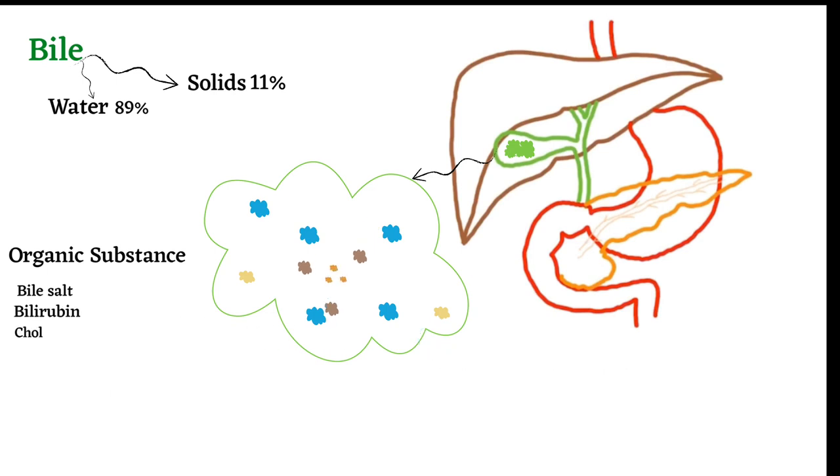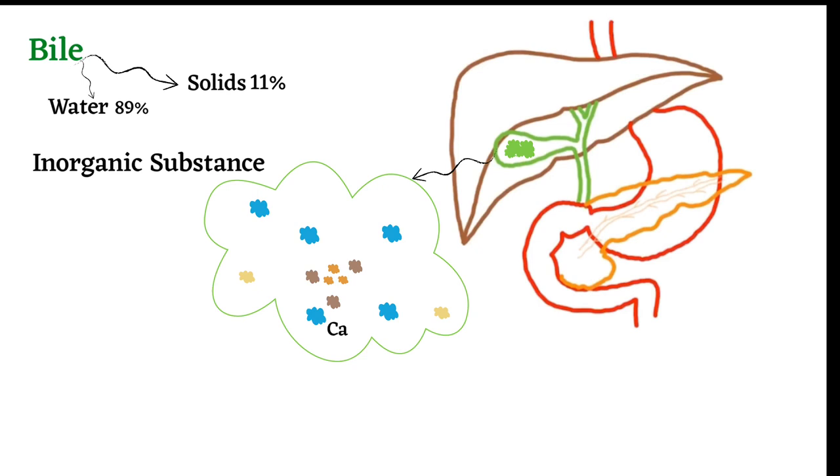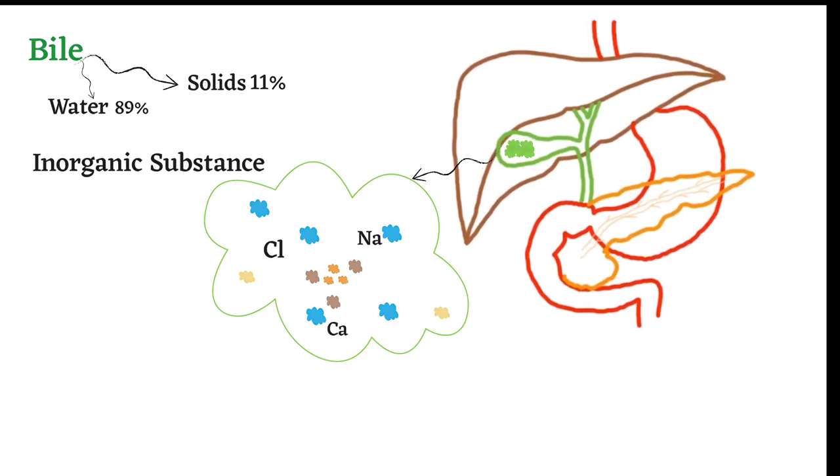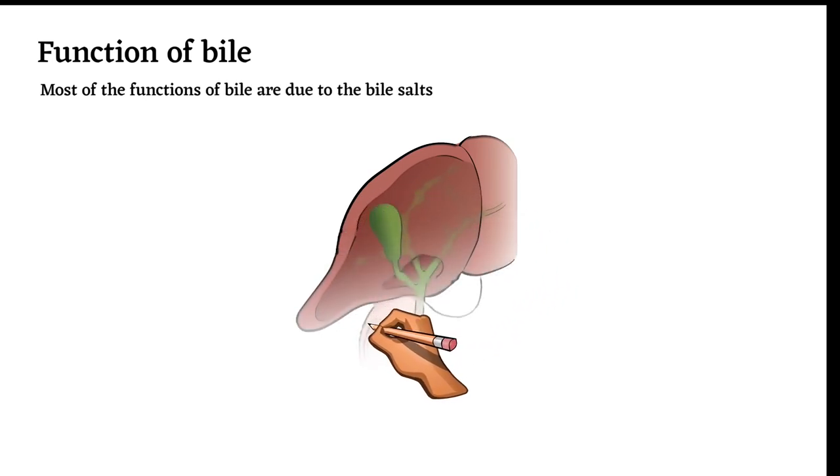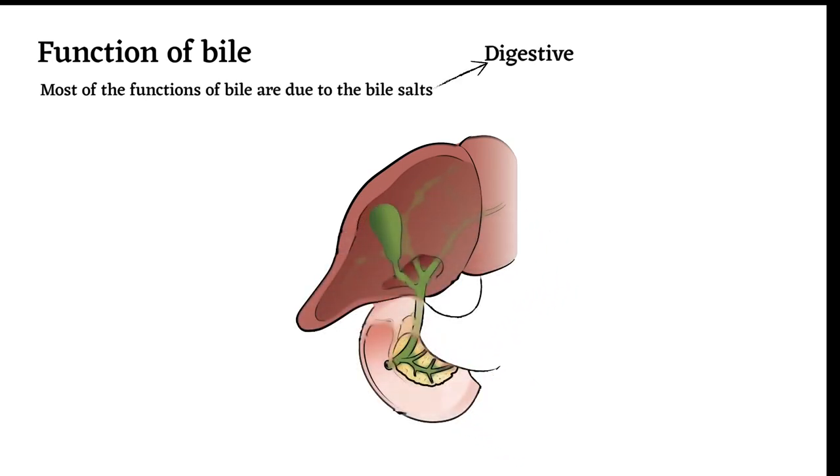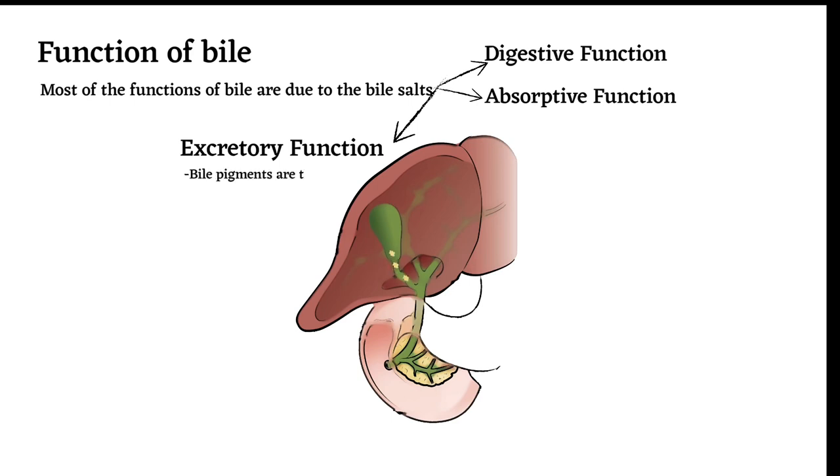Bile also contains cholesterol, phospholipids, fatty acids, and inorganic substances including calcium, sodium, and chloride. Most of the functions of bile are due to bile salts, including digestive, absorptive, and excretory functions. Bile pigments are the major excretory products. Other substances secreted in bile include heavy metals like copper and iron, some toxins, and cholesterol.